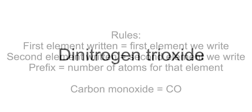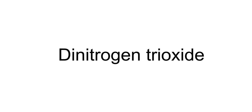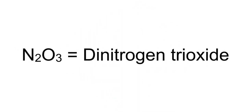Now it's your turn to try writing the formula for the name dinitrogen trioxide. Pause the video to give yourself some time. The answer is N2O3. Di means 2 and tri means 3.